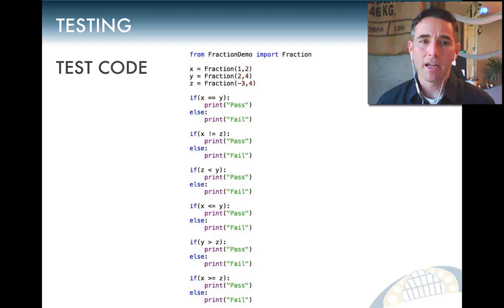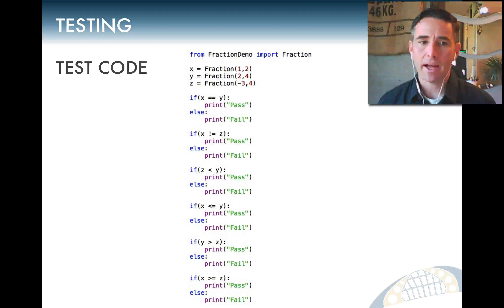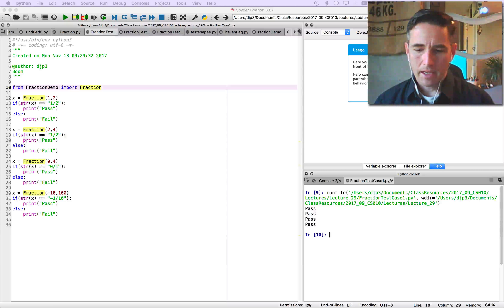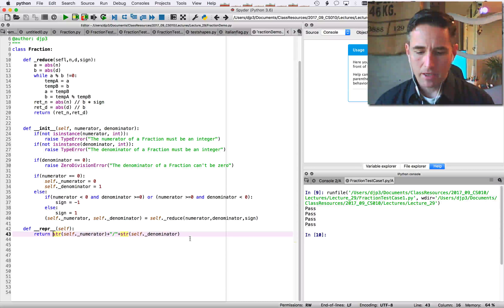The test code creates three fractions: X as one-half, Y as two-fourths (reduced to one-half), and Z as minus three-quarters. We expect X to equal Y, X not to equal Z, Z to be less than Y, X less-than-or-equal to Y, Y greater than Z, and X greater-than-or-equal to Z.